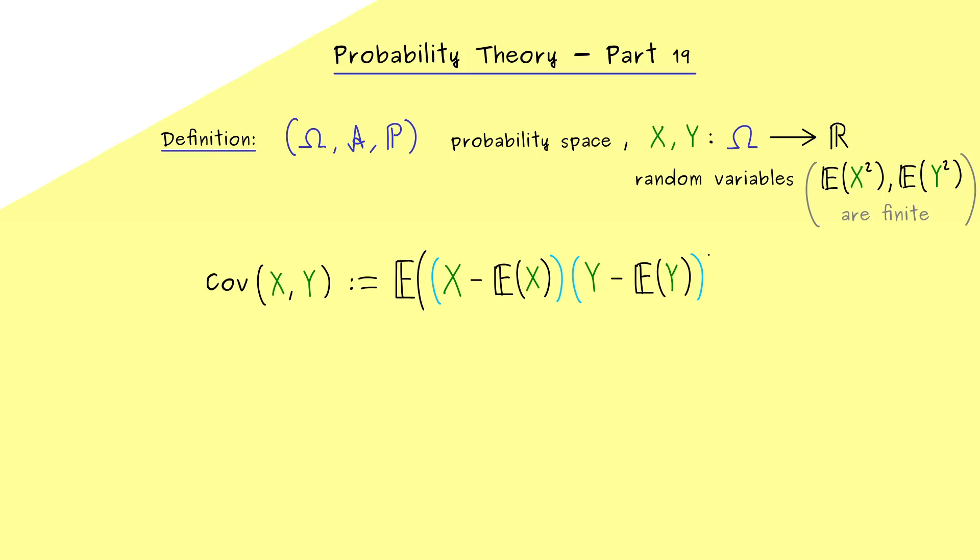And then, finally, we simply take the expectation of this whole thing. So what comes out for the covariance is again a real number. However, here please note, in general, this could be definitely also a negative number. And this is in contrast to the normal variance.